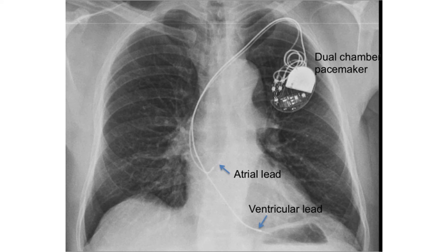Permanent pacemakers are useful when the heart rate is unduly slow due to electrical conduction abnormalities of the heart. When there are frequent episodes of fast rhythms from the lower chambers of the heart, an implantable cardioverter defibrillator can be life-saving. The final option in those with severe damage to the heart and lungs due to sarcoidosis could be a heart-lung transplant.